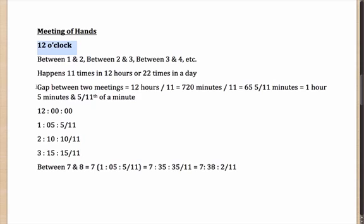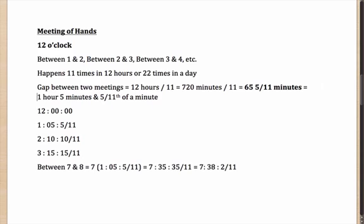The next question is: what is the gap between any two consecutive meetings? With 11 meetings in 12 hours, that is one meeting in 12/11 hours, or 720/11 minutes, which effectively comes out as 65 and 5/11 minutes — or 1 hour, 5 minutes, and 5/11 of a minute.